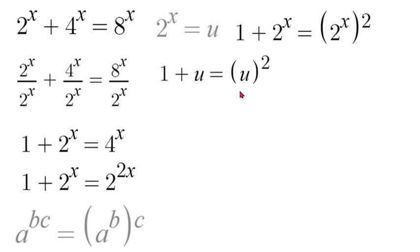Next we would rewrite this so we would subtract u and subtract 1 so that this equation would be equal to 0. So we'd have u squared minus u minus 1 is equal to 0.